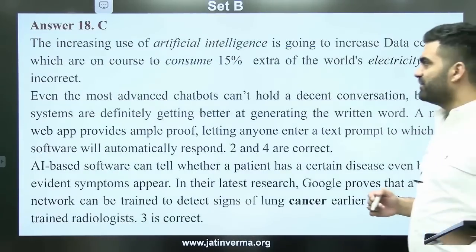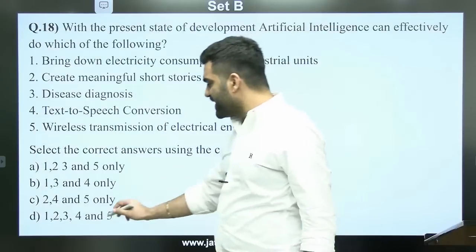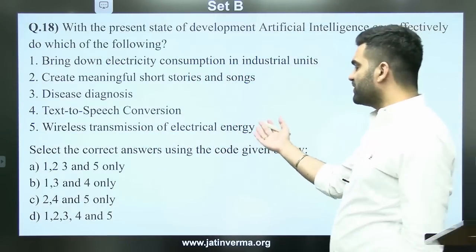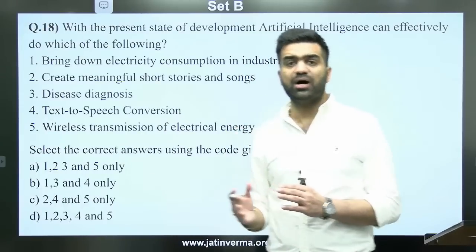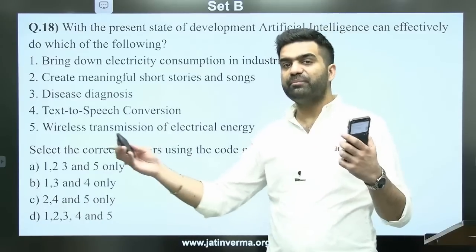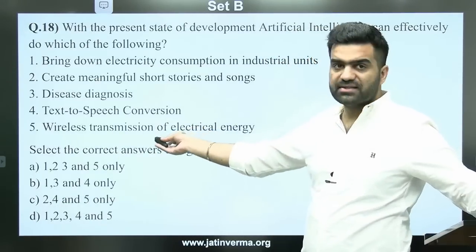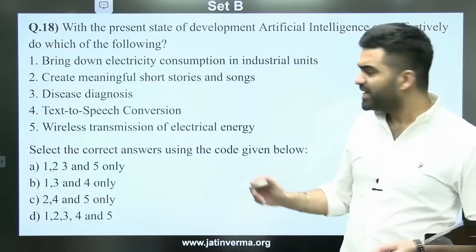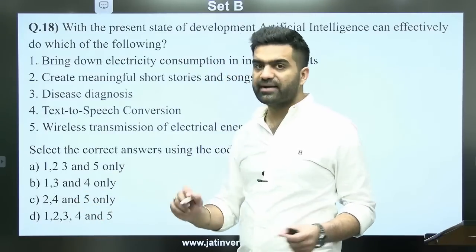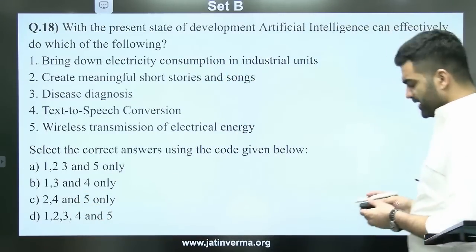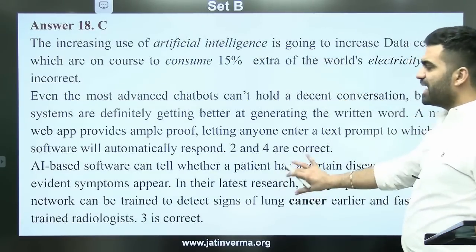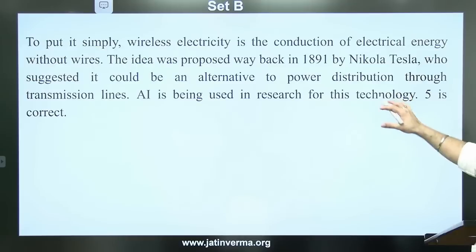The answer to question 18 is C. You need to apply your mind here. Wireless transmission of electrical energy means — can you transfer electrical energy from your mobile phone without any wire? The answer is no. So the technique of always marking D or 'all are correct' does not work. Some application of mind is always needed.